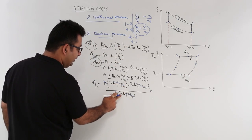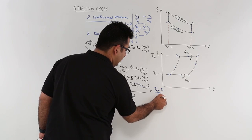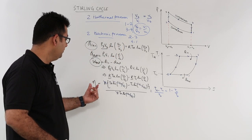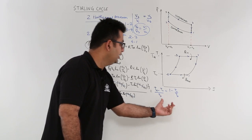So you are left with only Th minus Tl by Th, which is equal to 1 minus Tl by Th, which is the same expression as for the efficiency of the Carnot cycle. So the efficiency of a Stirling cycle is equal to the efficiency of the Carnot cycle.